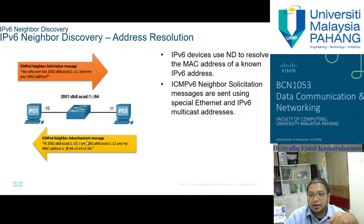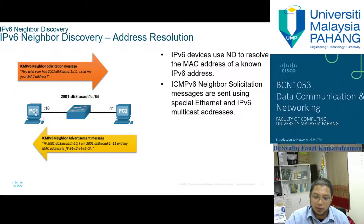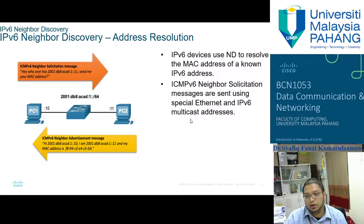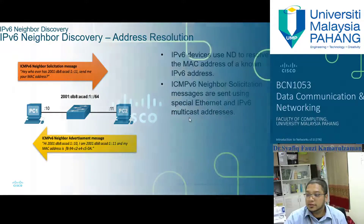In IPv6 neighbor discovery for address resolution, PC1 asks whoever has a specific IP address to send their MAC address, and PC2 replies with its MAC address. ICMPv6 Neighbor Solicitation messages are sent using special IPv6 multicast addresses, which helps provide security during the address resolution process.